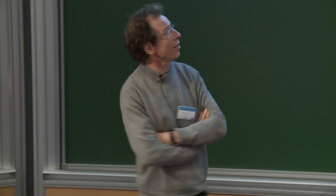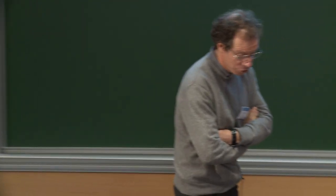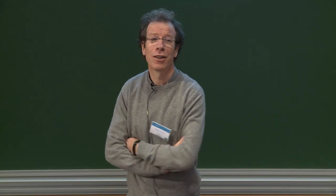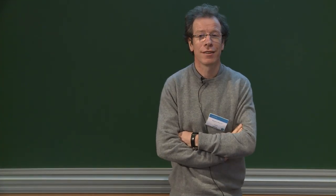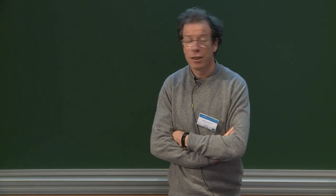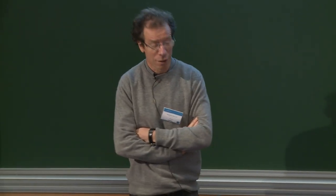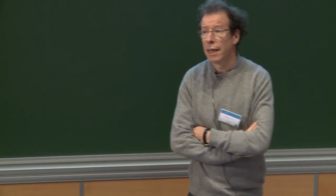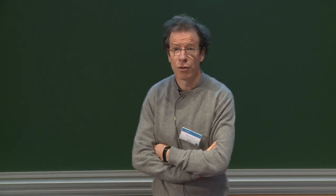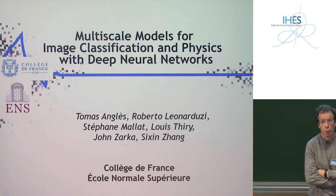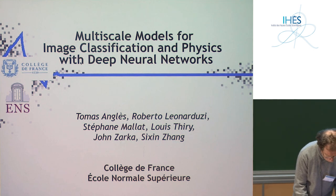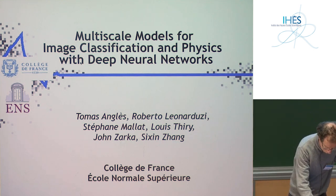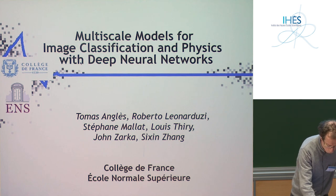There is one key word which is missing here, which is mathematics. The goal of the talk will be to try to show that there is a lot of very interesting mathematics which is emerging nowadays from all these problems, in particular neural networks. But there are links also with physics. And many beautiful, totally un-understood problems are coming out of these domains.